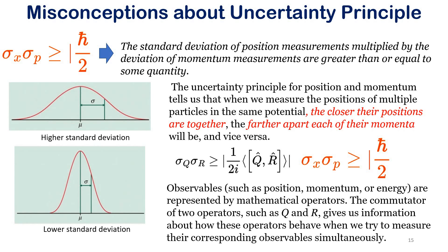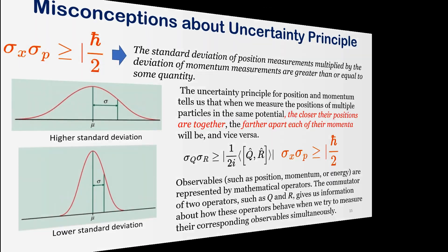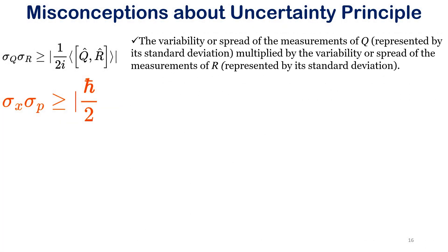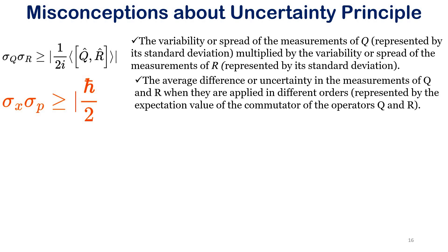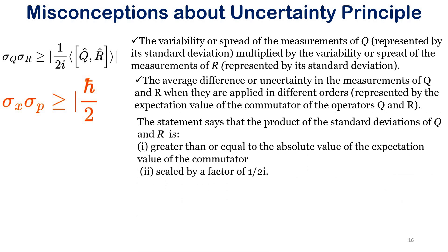Observables — momentum, position, energy — are represented by mathematical operators. The commutator of two operators Q and R gives us information about how these operators behave when we try to measure the corresponding observables simultaneously. The variability or spread of Q measurements, represented by standard deviation, is multiplied by the spread of R measurements. This gives the average difference in the measurements of Q and R when they are applied in different orders.